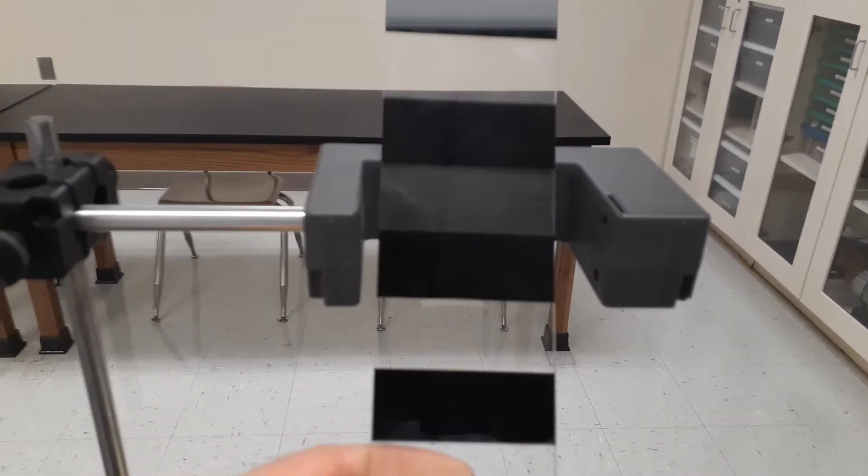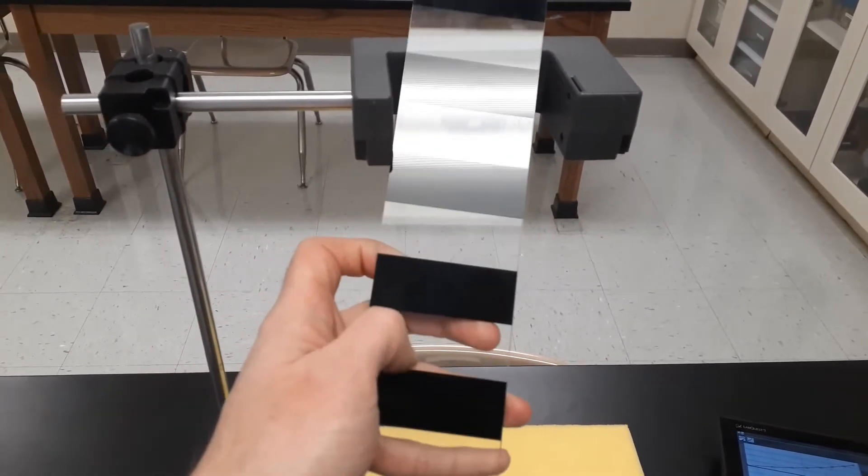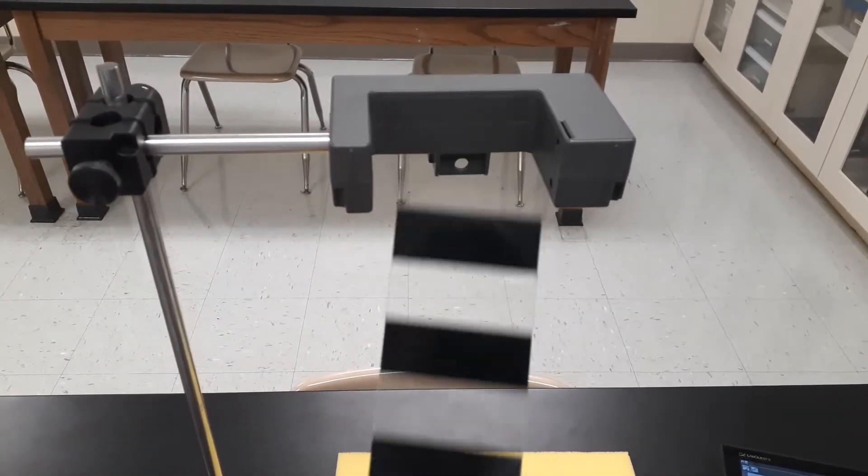The lab quest already knows how wide these stripes are. And so based off the width of these stripes, it's going to measure how much time is the signal blocked, then how much time do we receive the signal, that's blocked and received, and so on and so forth.